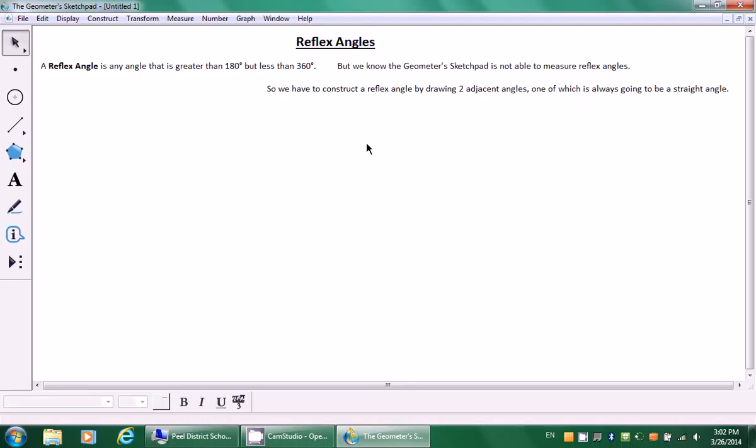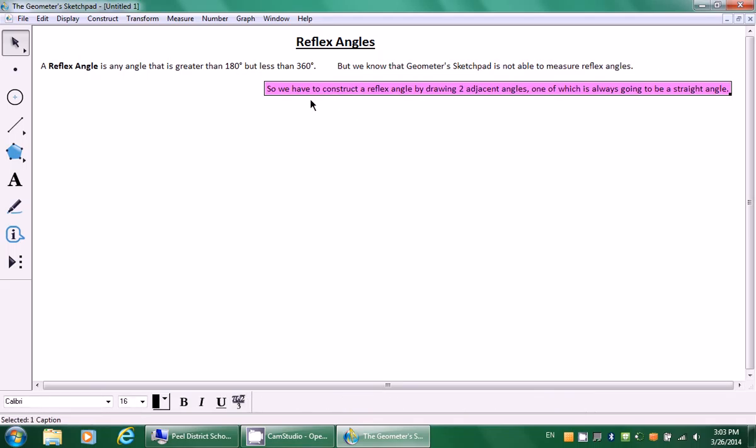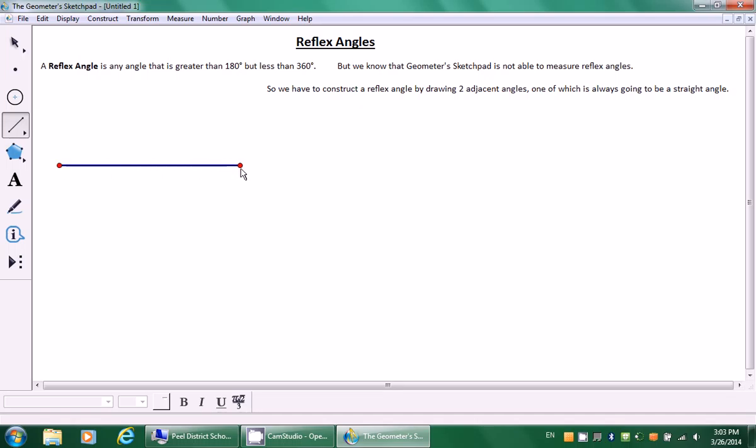So let's review a few things. Number one, a reflex angle is any angle that is greater than 180 degrees but less than 360. However, we know that Geometer Sketchpad is not able to measure reflex angles. So we have to construct a reflex angle by drawing two adjacent angles, one of which is always going to be a straight angle.